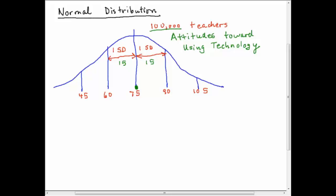Unfortunately when we actually do research we can't really sample 100,000 teachers. They probably wouldn't participate in our study and usually we like to have a sample size of n is greater than or equal to 30.